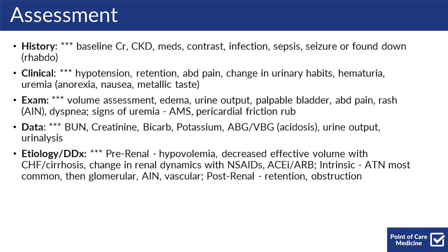For your assessment, starting with history: know their baseline creatinine, whether they have CKD, any meds that they've changed, if they have an infection, sepsis, if they had a seizure, or were found down concerning for rhabdomyolysis. Clinically, look for hypo- or hypertension, whether they're retaining, if they're having abdominal pain, changes in urinary habits, hematuria, or any signs of uremia including anorexia, nausea, or metallic taste.